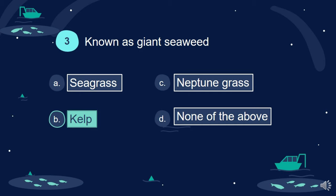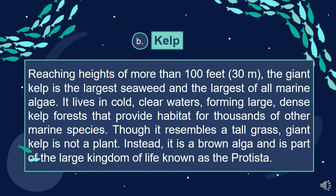Answer: B. Kelp. Reaching heights of more than 100 feet, or 30 meters, giant kelp is the largest seaweed and the largest of all marine algae. It lives in cold, clear waters, forming large, dense kelp forests that provide habitat for thousands of other marine species. Though it resembles a tall grass, giant kelp is not a plant. Instead, it is a brown alga and is part of the large kingdom of life known as the Protista.